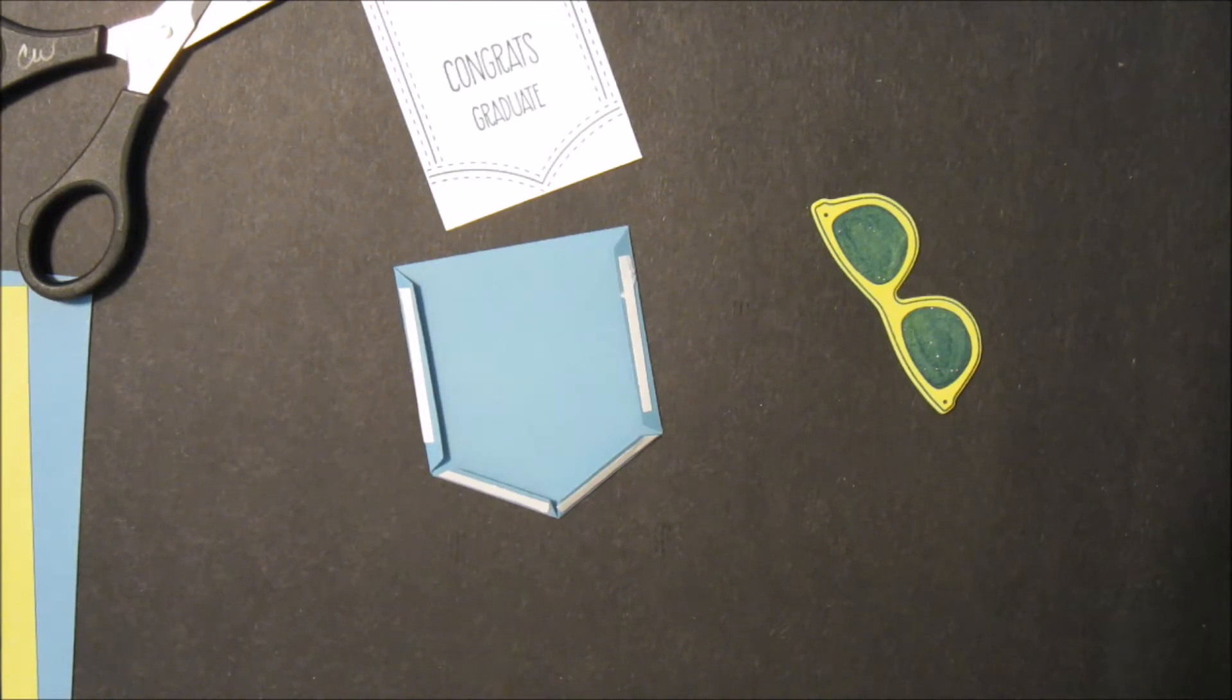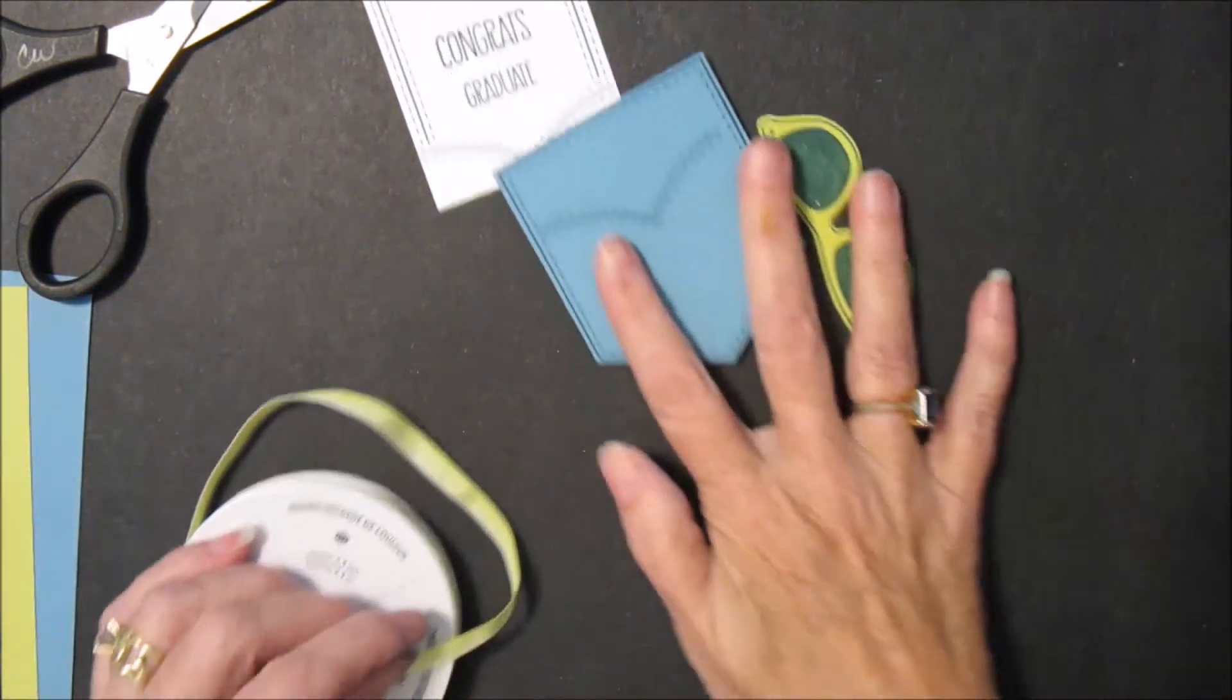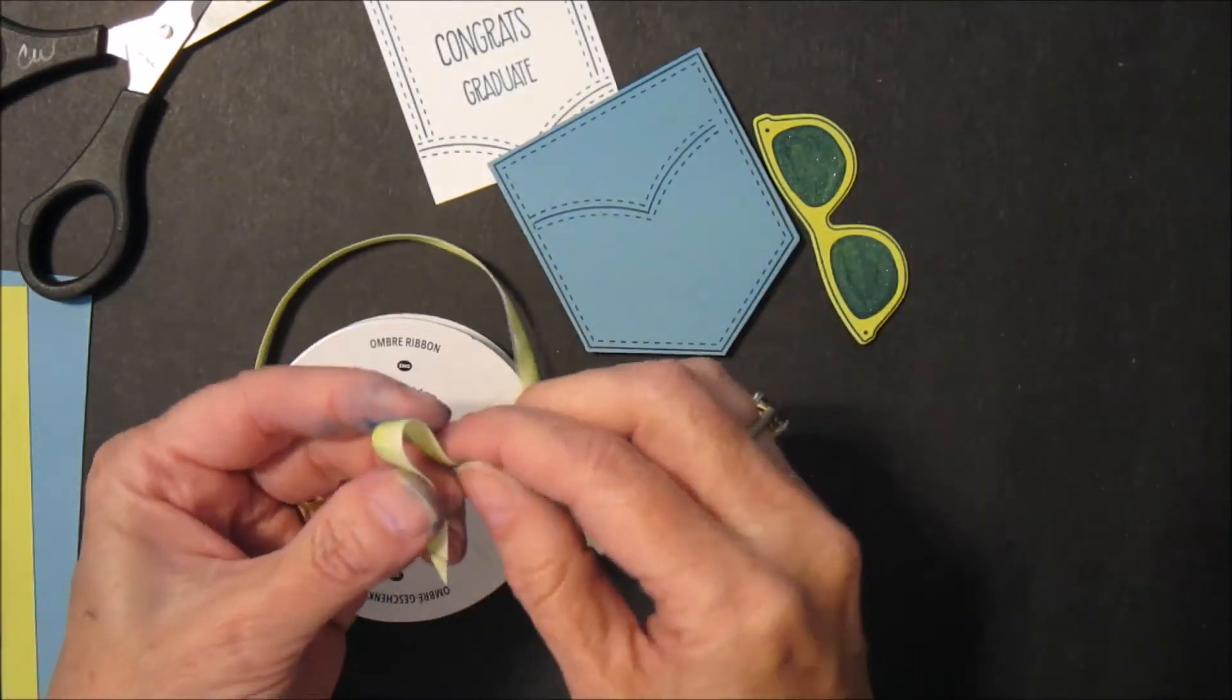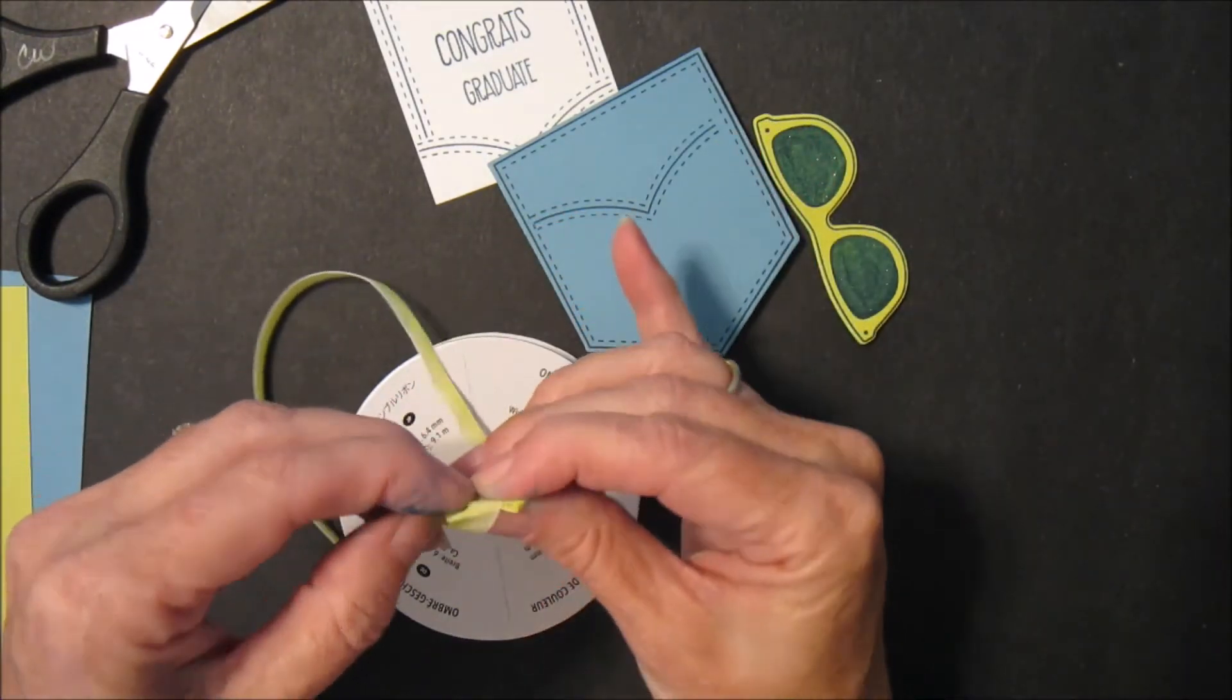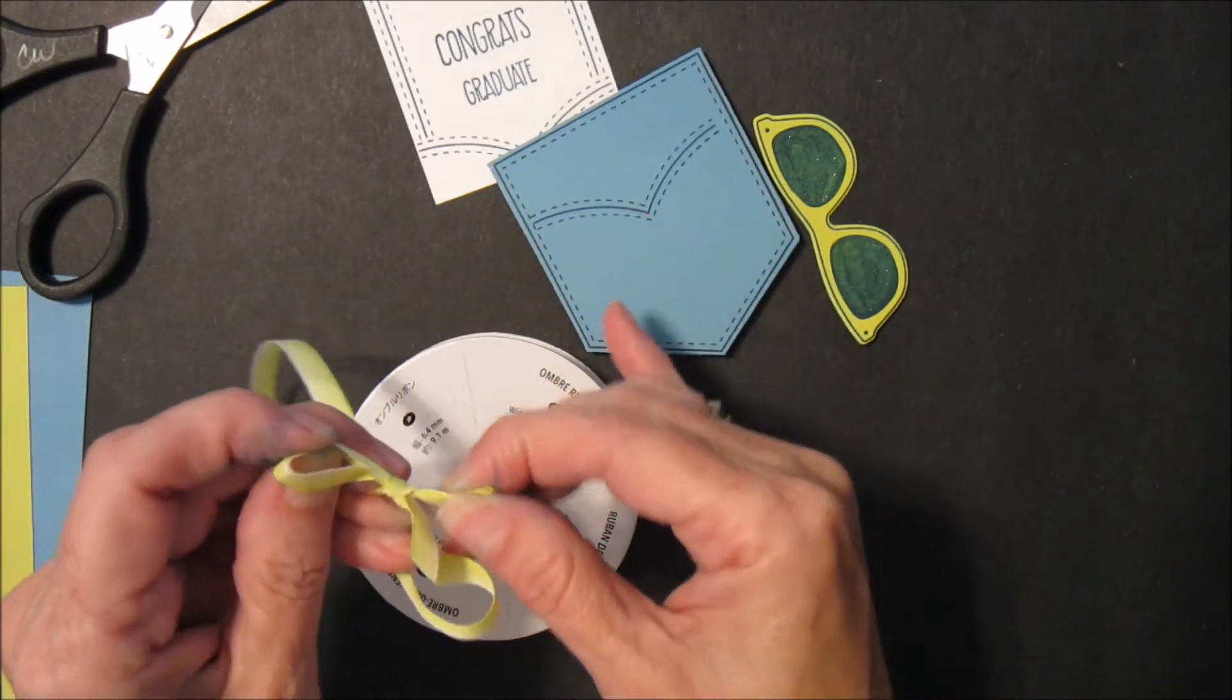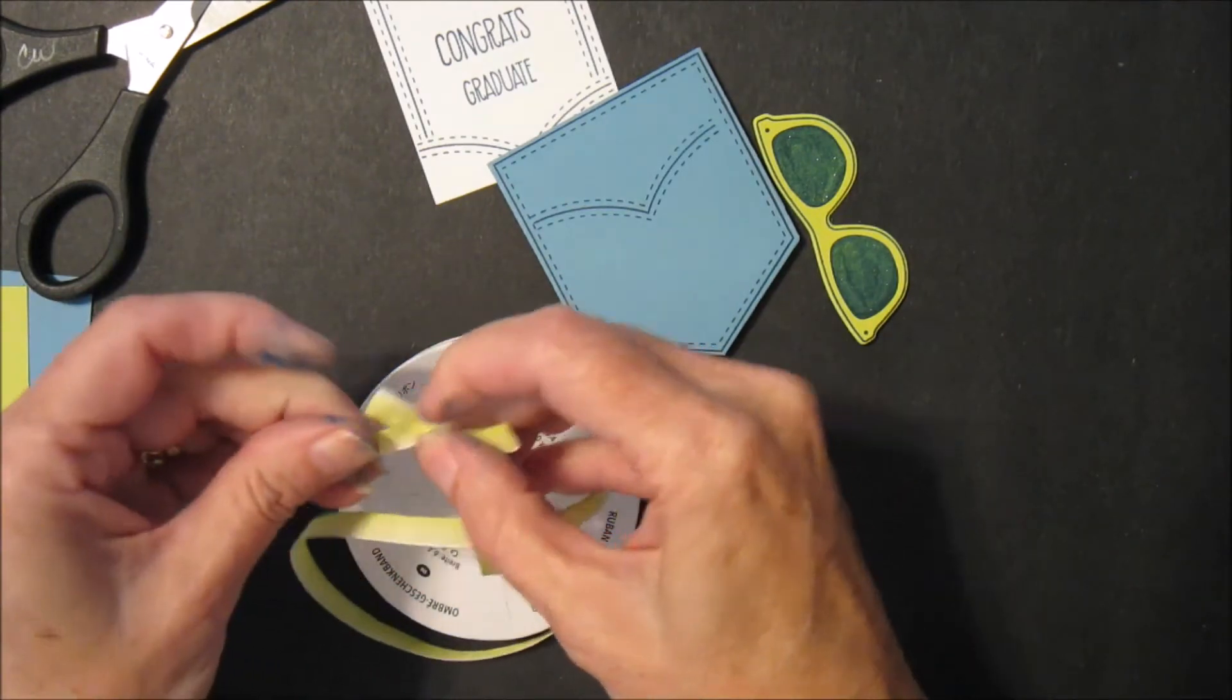And then finally a couple of other little pieces before we start our assembly. I have the ombre ribbon and I've got a piece of the Lemon Lime Twist, and I'm just going to make a little tiny bow, just like that.